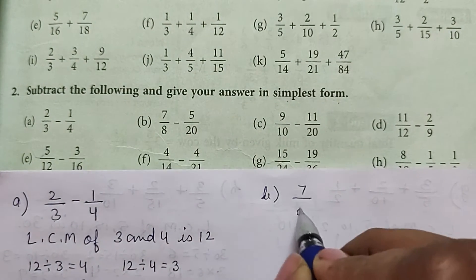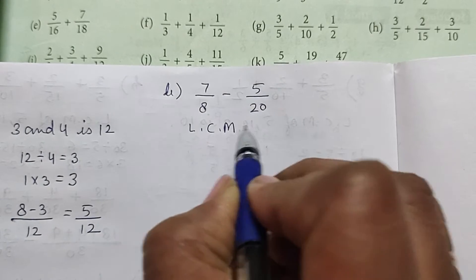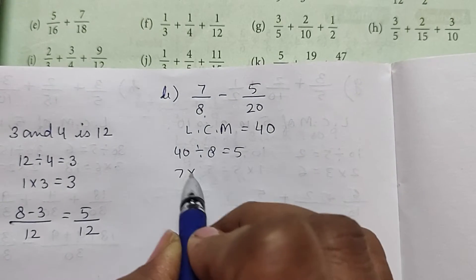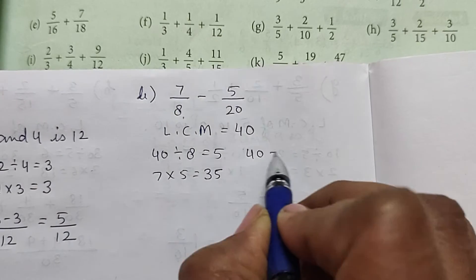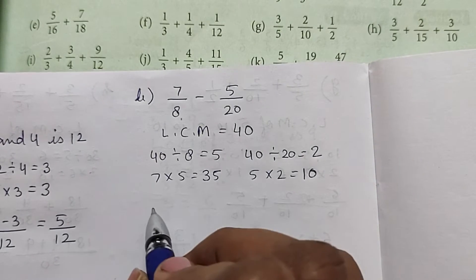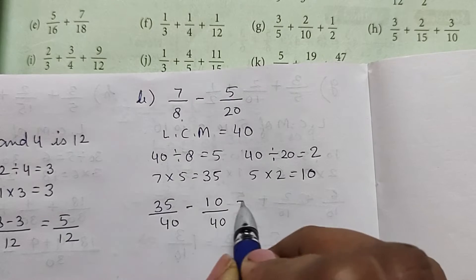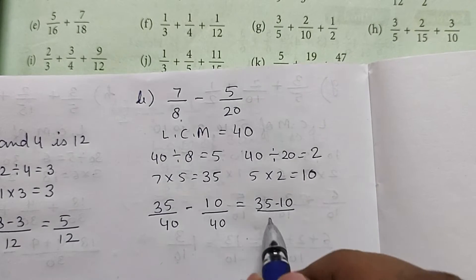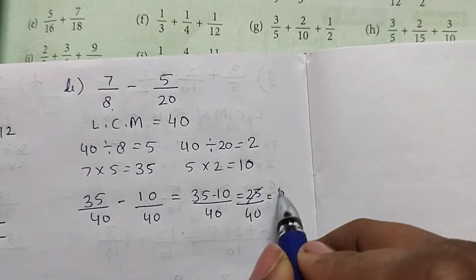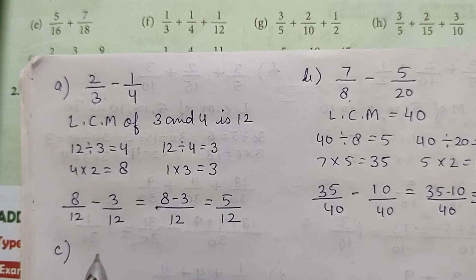Part b: 7/8 minus 5/20. The LCM is 40. 40 divided by 8 is 5, and 7 into 5 is 35. 40 divided by 20 is 2, and 5 into 2 is 10. So the fractions are 35/40 minus 10/40, which equals 25/40. Simplifying by dividing by 5: the answer is 5/8.